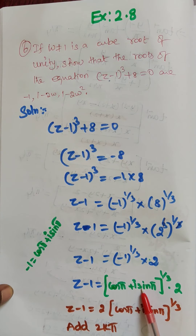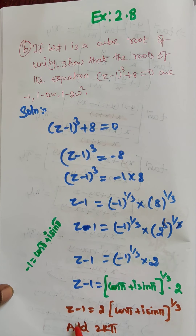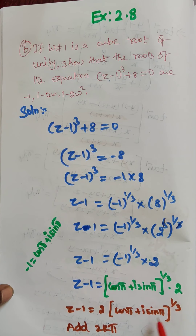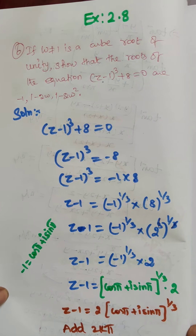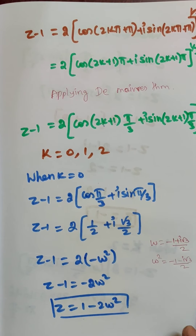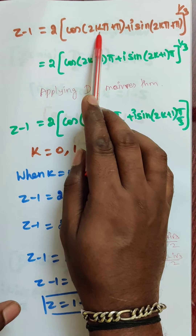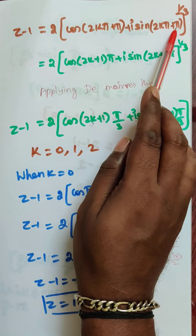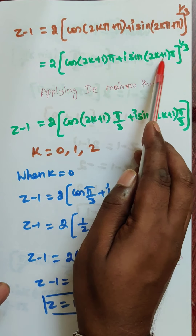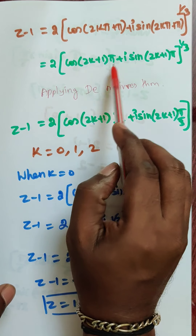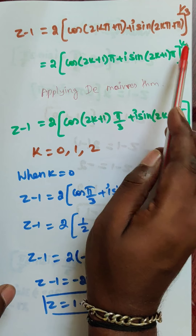So now z minus 1 is equal to that whole expression to the power 1 by 3 into 2. So z minus 1 is equal to 2 into cos pi plus i sin pi, the whole to the power 1 by 3. Now we add 2k pi, so z minus 1 is equal to 2 into cos 2k pi plus pi plus i sin 2k pi plus pi, the whole to the power 1 by 3. Taking pi outside, that gives 2k plus 1 into pi, the whole to the power 1 by 3.